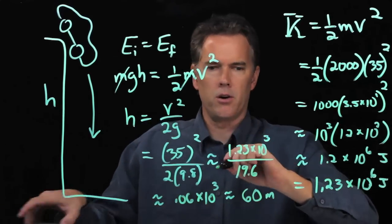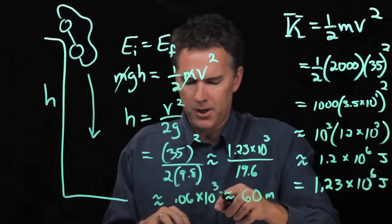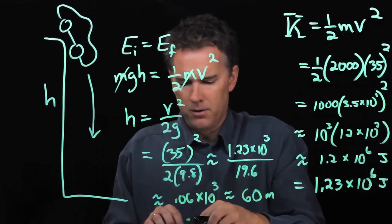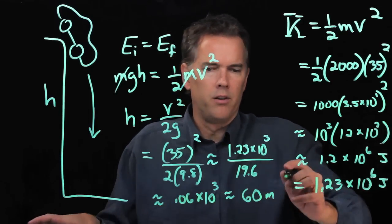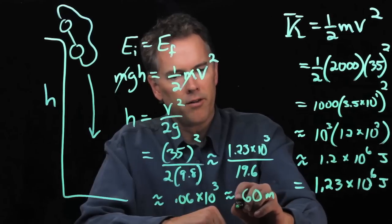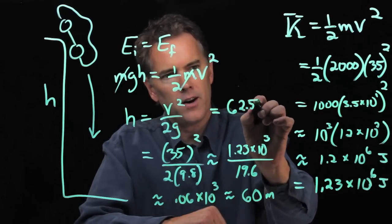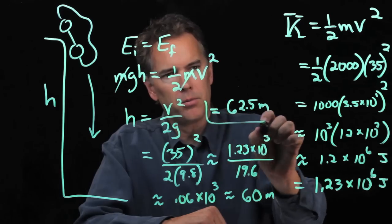And let's just punch it into our calculator to double check. 35 squared divided by 2 divided by 9.8 equals 62.5. So I'll put that right here. 62.5 meters. So our guess was pretty good.